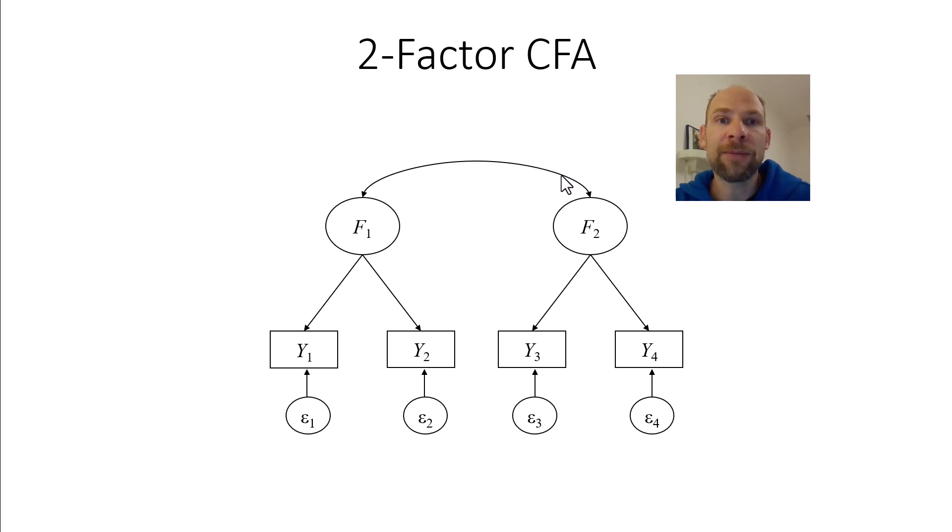Like, for example, we know from simulation work that models that have only two indicators per factor are more prone to improper solutions in general. So we know that improper solutions with negative residual variance estimates are common for misspecified models. They're relatively common for small samples, but they're also common when you have designs with just two indicators per factor. And so this is another argument, so to say, another reason why people recommend having at least three indicators per factor because it stabilizes your identification and also the estimation of the model. So you are less likely to run into an improper solution.